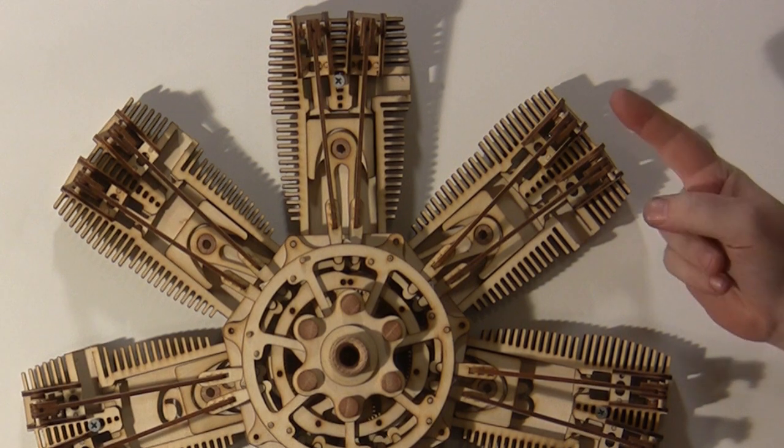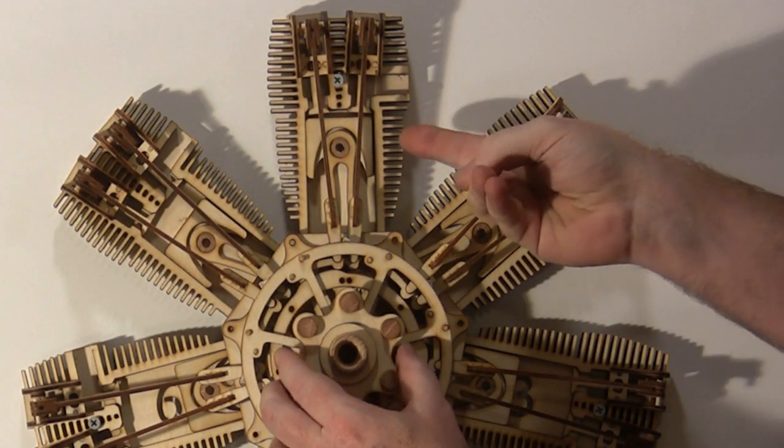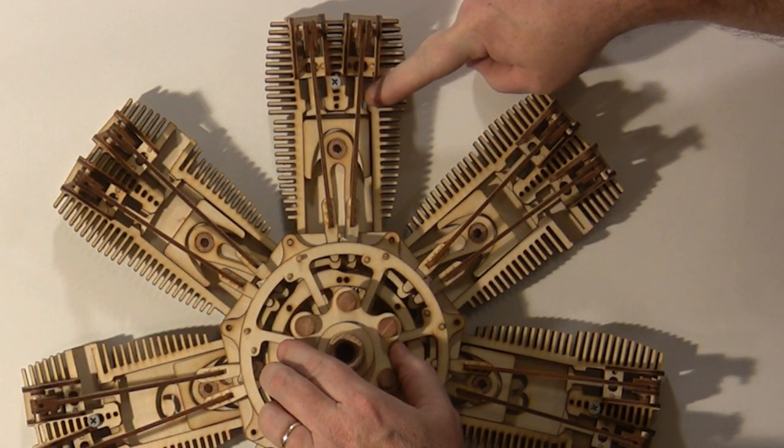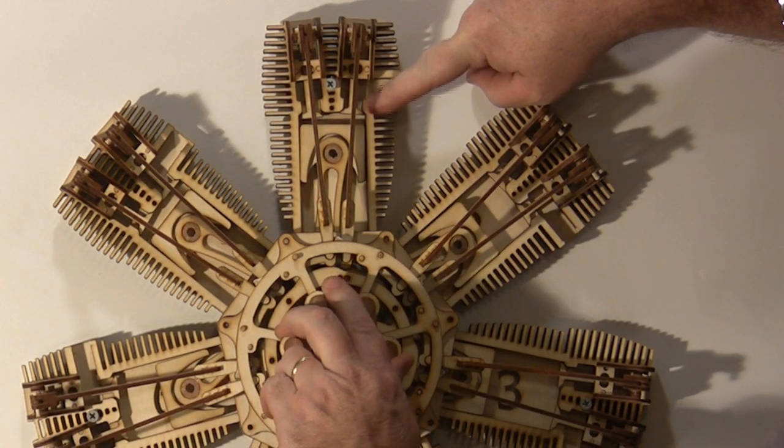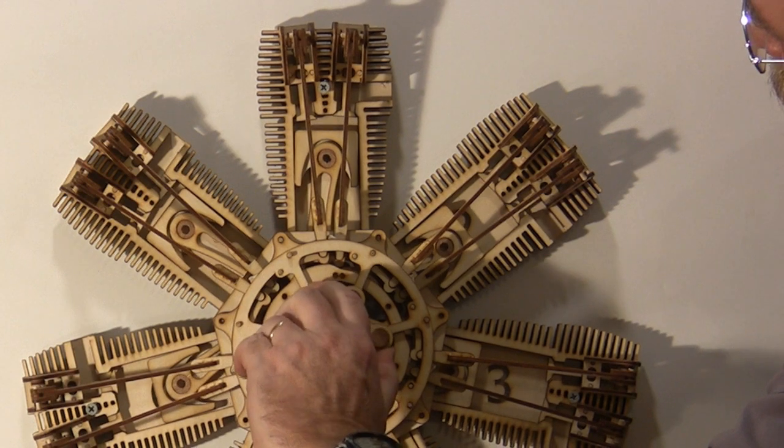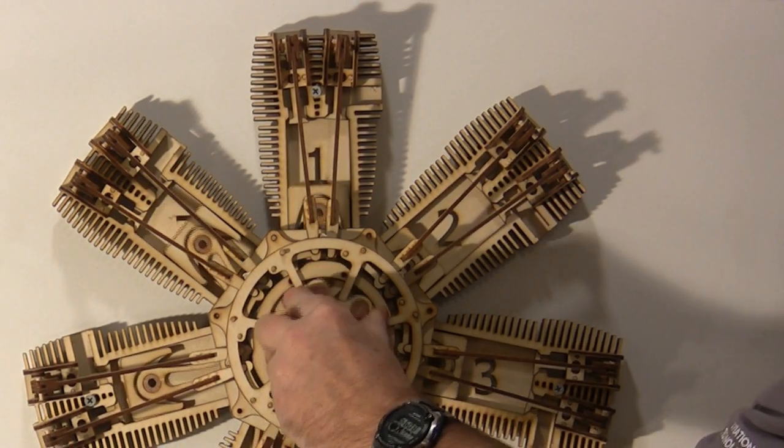To show you the quality of this model, I'm going to trace you through the four strokes using this number one cylinder across here. Now, you can tell that this cylinder right now is in between the exhaust and intake stroke. And as we begin to turn, the intake valve begins to open, the exhaust valve closes fully, and we're on intake, which sucks air and fuel into the cylinder.